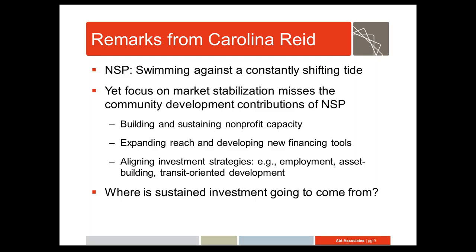NSP has also built a stronger coalition of stakeholders that care about mortgage finance — it's not just affordable homeownership groups paying attention anymore, but also affordable housing developers and CDBG offices. This coalition has been an important advocate for reform, evident in CFPB rulemaking as well as lobbying for things like the FHA Distressed Asset Purchase Program. NSP also exposed important financing gaps that are starting to be filled, such as new hybrid tenure products and scattered site affordable rentals — conversations that weren't happening five years ago, and now they are.